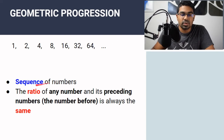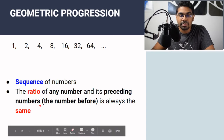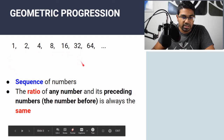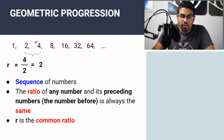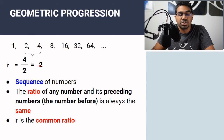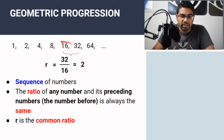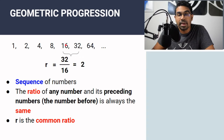Geometric progression is also a sequence of numbers, but this time the ratio of any number and its preceding number — the number before — is always going to be the same. For example, the ratio of 4 and 2 is 2 (4 divided by 2), and 32 divided by 16 is also 2. This is known as the common ratio R.